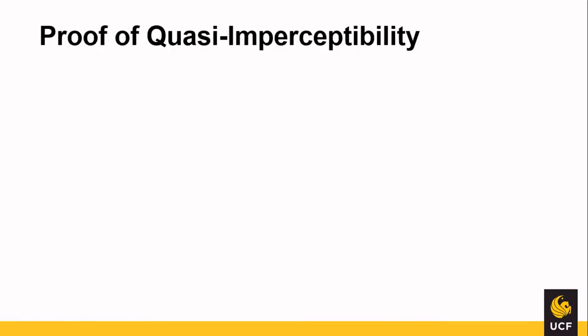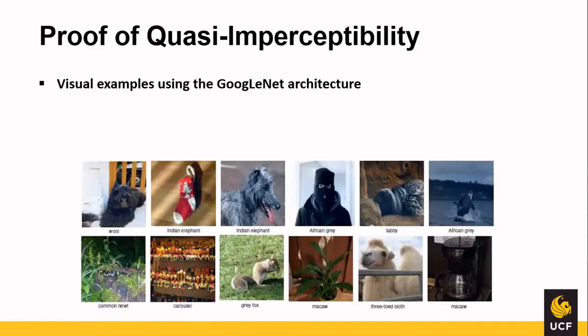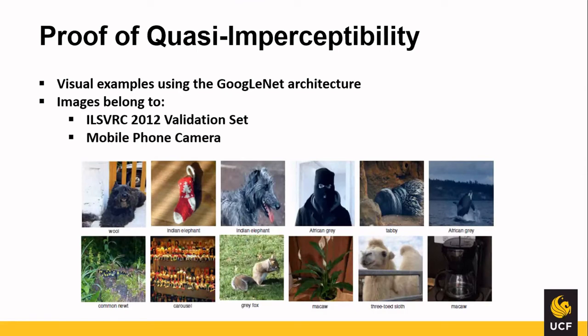They also provided proof of quasi-imperceptibility of these universal perturbations using the GoogLeNet architecture. As you can see on screen, the perturbed images show that the perturbation is not noticeable. The first six images are from the validation set while the last four are from the authors' mobile phone camera.